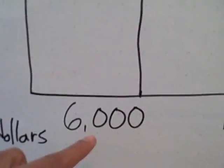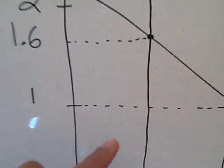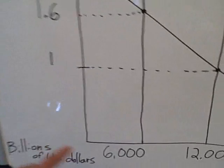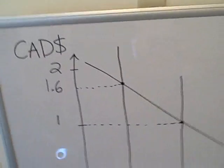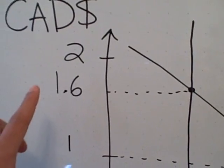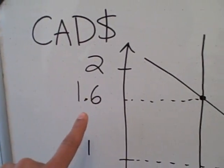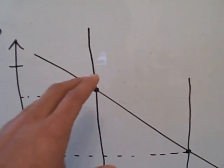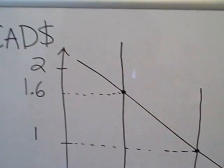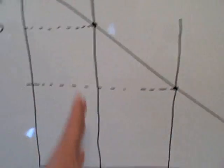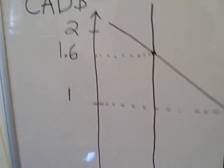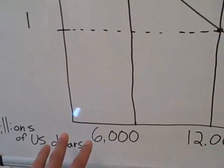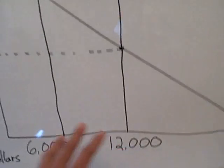Let me put that on a graph real quick. I took this off Wikipedia. This axis is billions of dollars — so at one point in time there were about six thousand billion US dollars available in the world market. This represents the Canadian demand for US dollars, and let's say that demand stays the same. At that time, you needed 1.6 Canadian dollars to buy the equivalent of one American dollar, because of how many dollars were available.